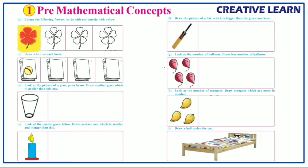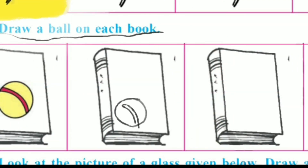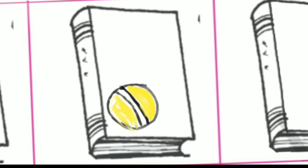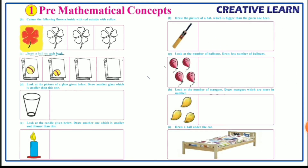Second question: draw a ball on each book. Here one ball is drawn on the first book, so we have to draw the same ball on the remaining books also. You should draw balls on the remaining books like this.